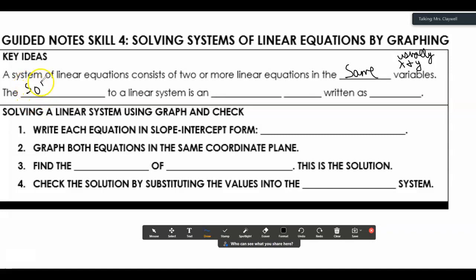So the solution to a linear system is an ordered pair written as x, y.